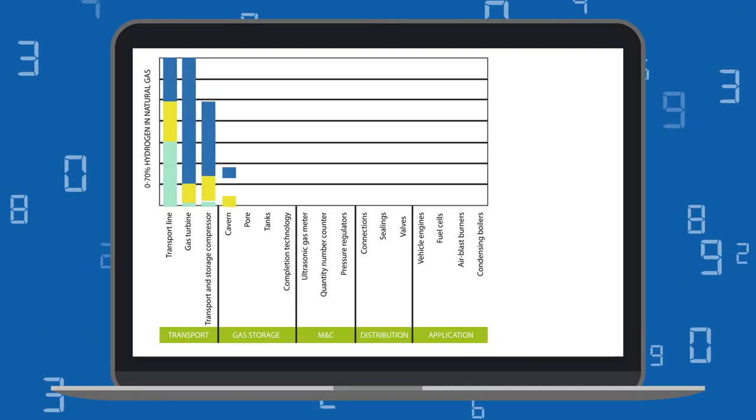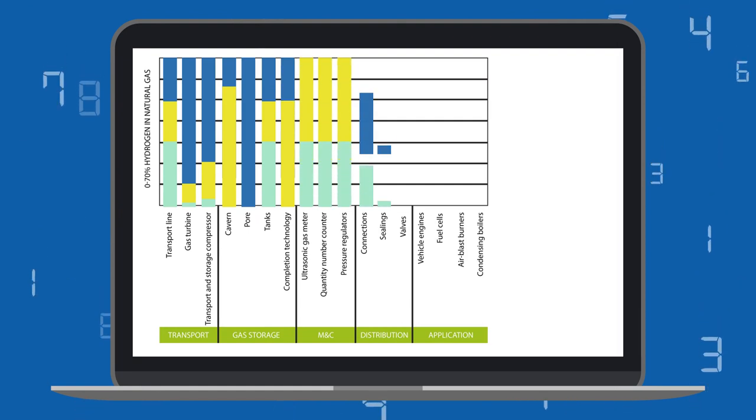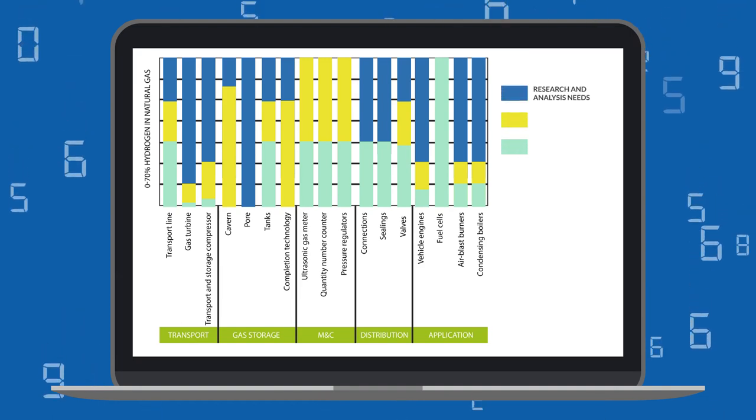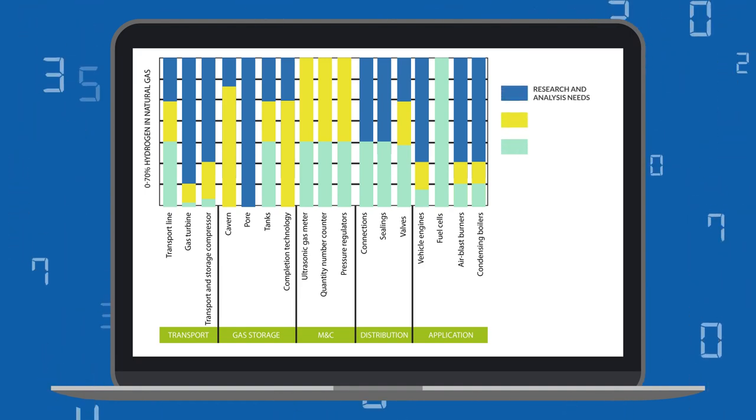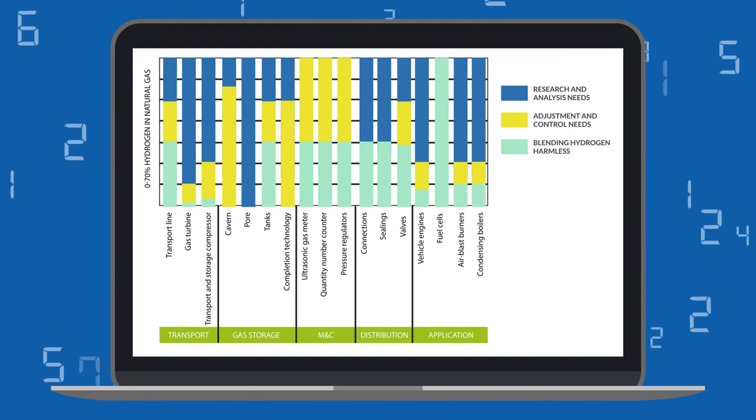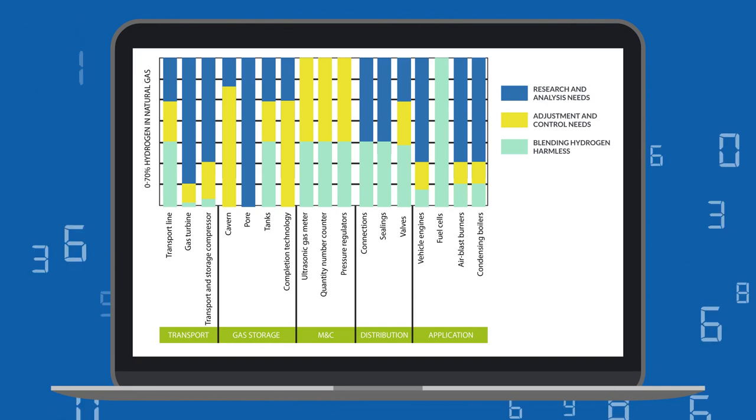Thereby, the hydrogen concentration range goes from 0% to 70%. The various compatibility areas are color-coded. The blue section indicates the need for research and analysis. The yellow section illustrates where there is a need for regulation and control. And the turquoise section indicates the areas where hydrogen blending is safe.